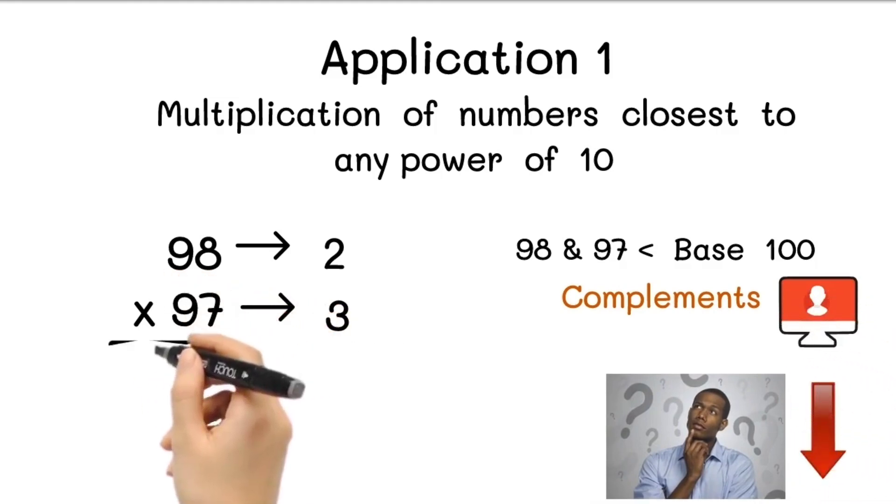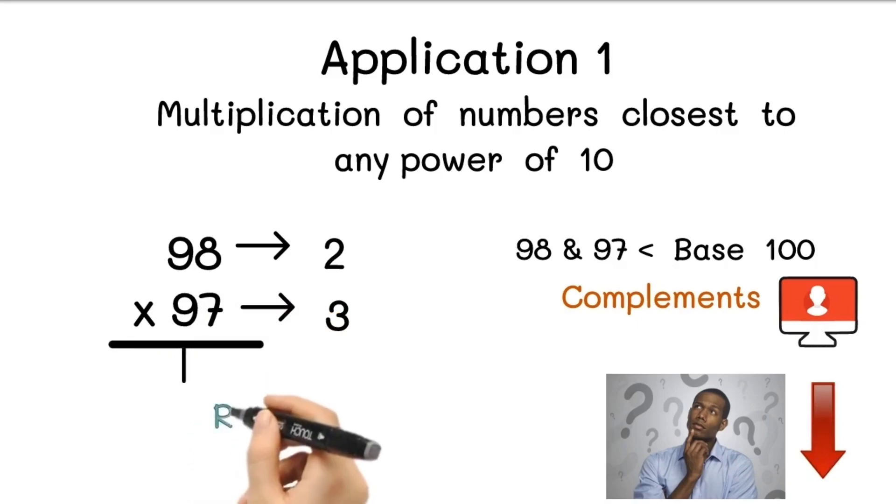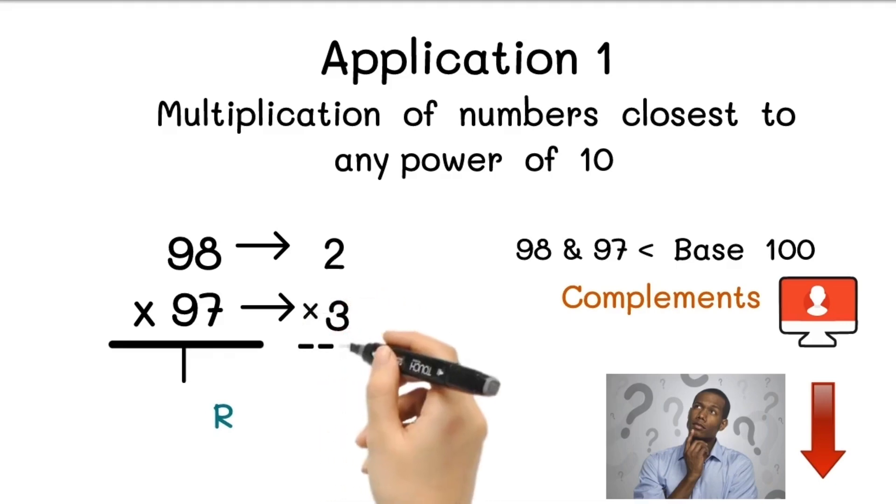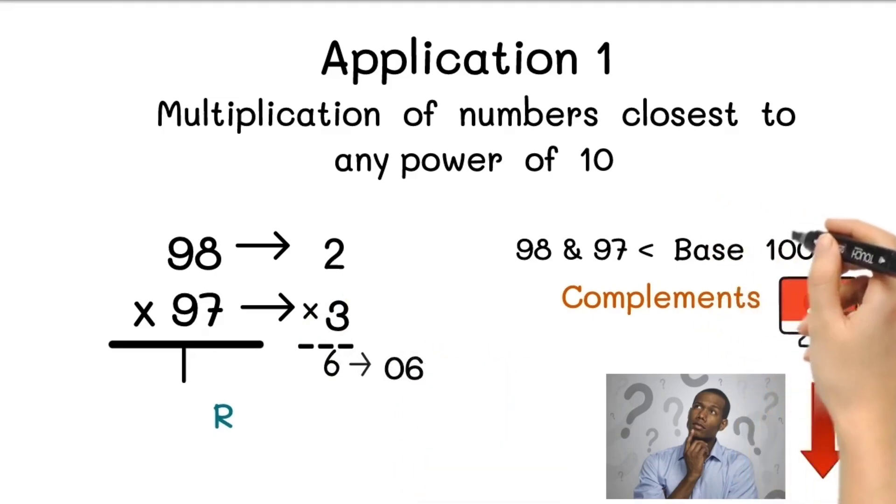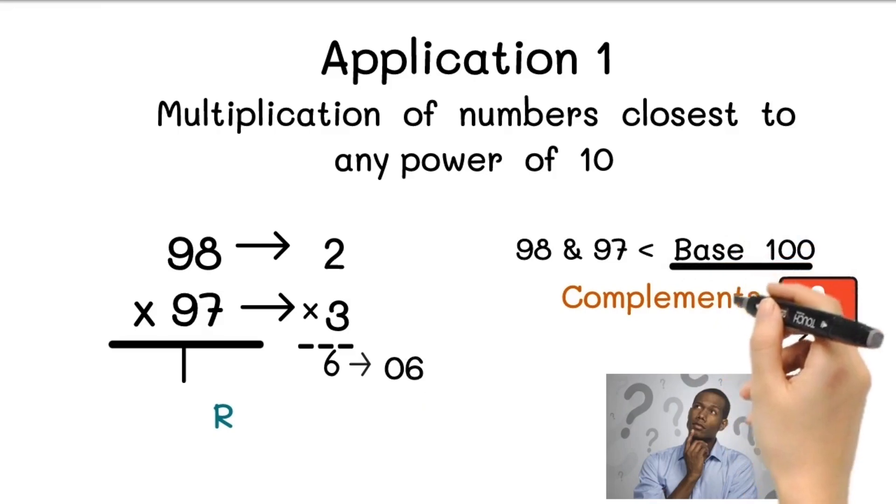In the next step we will find out the left and right part of the answer. To get the right part, we need to multiply complements together. So 2 multiply by 3 equals 6. We will write this 6 as 06. Since our base is 100, the answer must be double digit, so we have to add 0 to the left of 6. Write down this 06 in the answer.